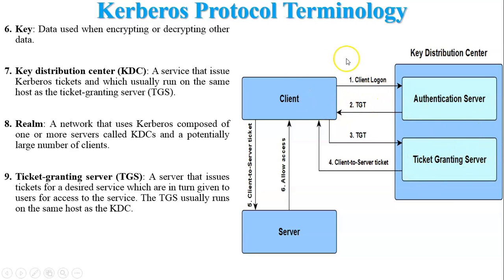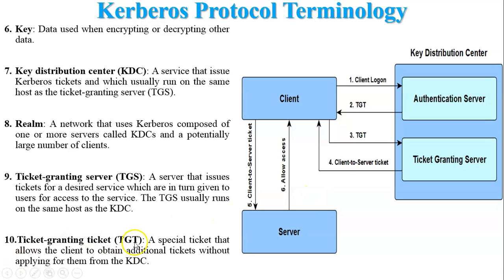In the Authentication Server, the client provides their identity, and the authentication server generates one ticket to access the Ticket Granting Server. The client takes this ticket and sends it to the Ticket Granting Server. The TGS then generates one ticket for communication between the client and server, and sends it to the client. The client provides this ticket to the server, and the server allows access to its services. Ticket Granting Ticket (TGT): a special ticket that allows the client to obtain additional tickets from the KDC, used specifically for accessing the Ticket Granting Server.